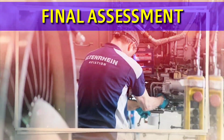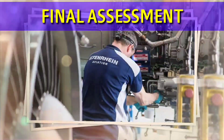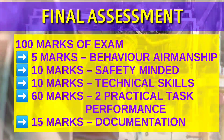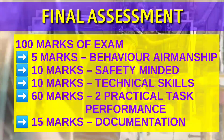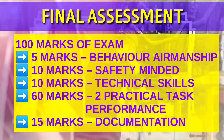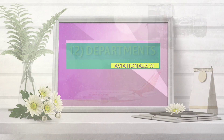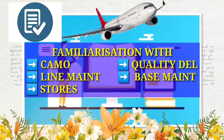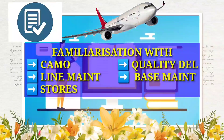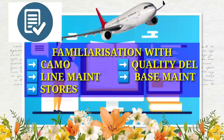All trainees will undergo a final assessment in which a total of 100 marks exam will be carried out as follows: 5 marks for behavior and airmanship, 10 marks for safety mindedness, 10 marks for technical skill, 60 marks for 2 practical task performances, and remaining 15 marks for documentation. Students undergoing this training will get familiarization with CAMO, quality department, line maintenance, base maintenance, and stores. Remember, component and engine shop are part of the base maintenance department.